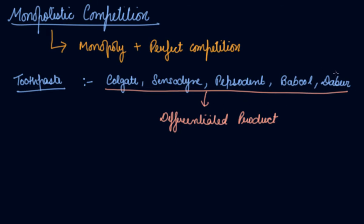Dabur includes all herbal things. Pepsodent includes ingredients for sensitivity. Then you have salt in it, charcoal in it, whitening in it. Colgate has other things. Sensodyne is for sensitivity. And Babool has its own unique ingredients and strength. So these are differentiated products — you can differentiate between each product and what they are selling. But actually, what they are all selling is toothpaste.